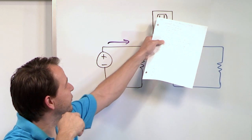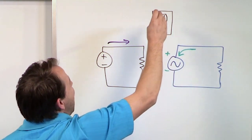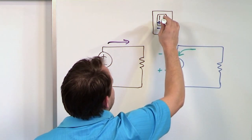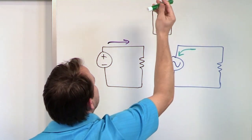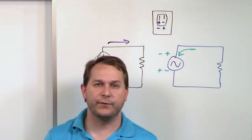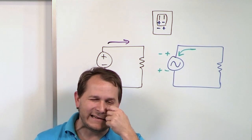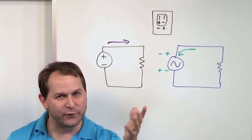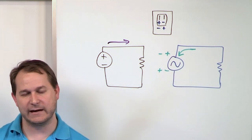Look at that wall socket again. Imagine you've plugged a vacuum cleaner into it. In one instance the current may be coming out of one prong into your load and back into the other prong; then just a few milliseconds later everything's flipped and the current comes out the other way — out to in, out to in, flipping back and forth 60 times per second. The voltage is switching direction, and because of Ohm's law, the current is switching directions at the same frequency.